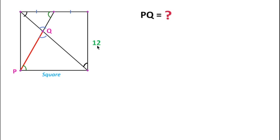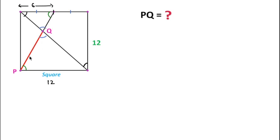According to the question, the side length of the square is 12 units and this is the midpoint, so this side length will be 6. The proportionality ratio is 2, meaning everything will be double. As we can see, this side length is 6 and the corresponding side of the other triangle is 12.